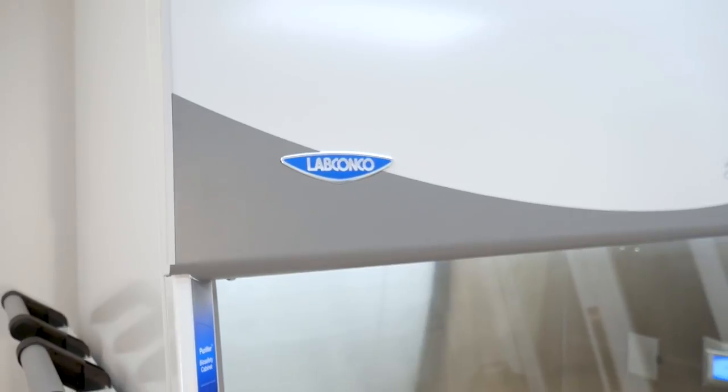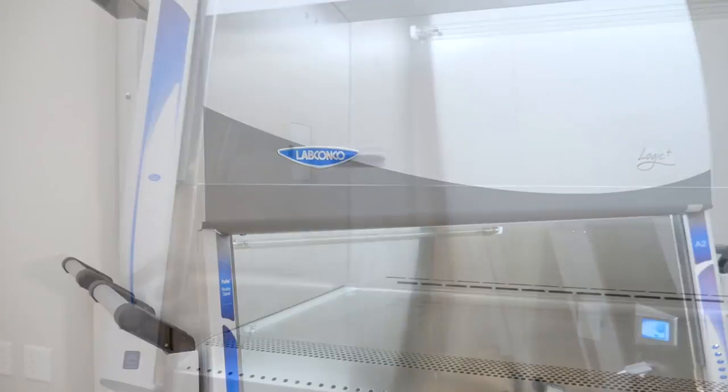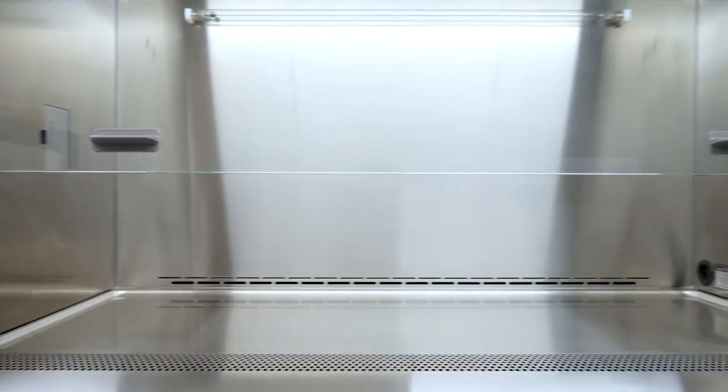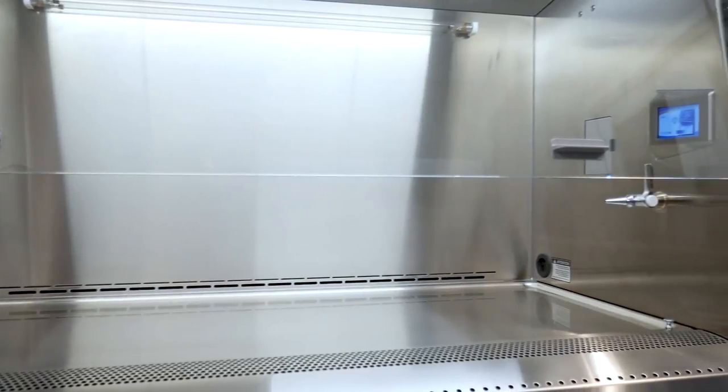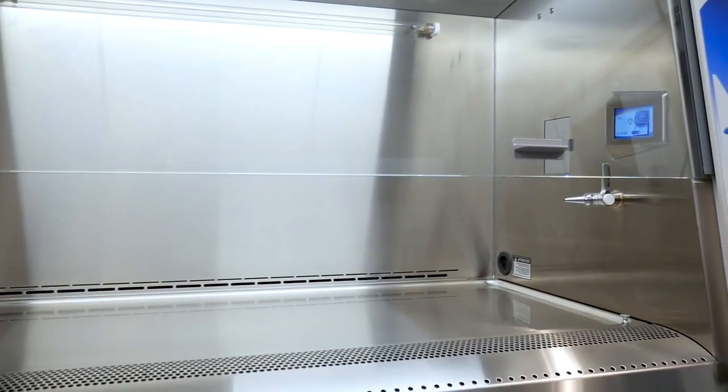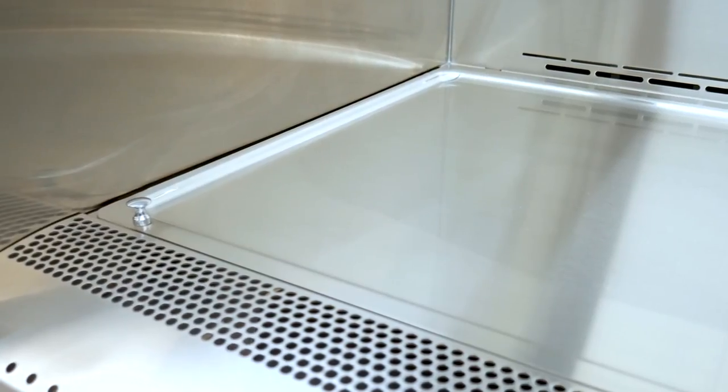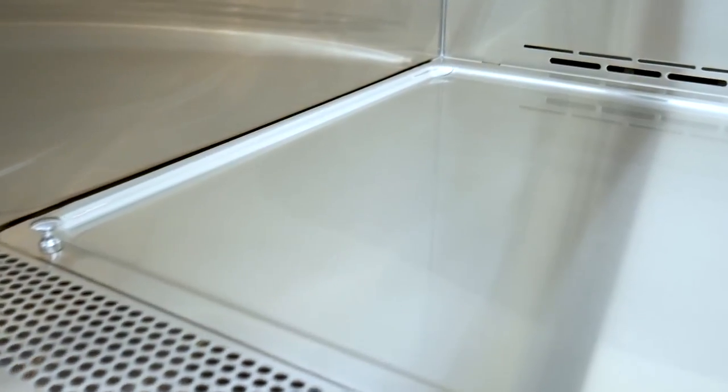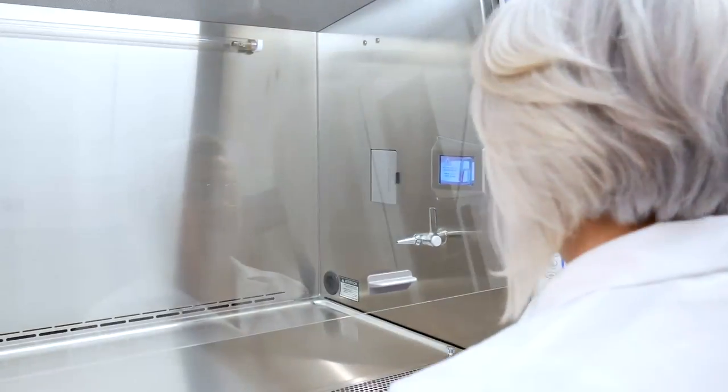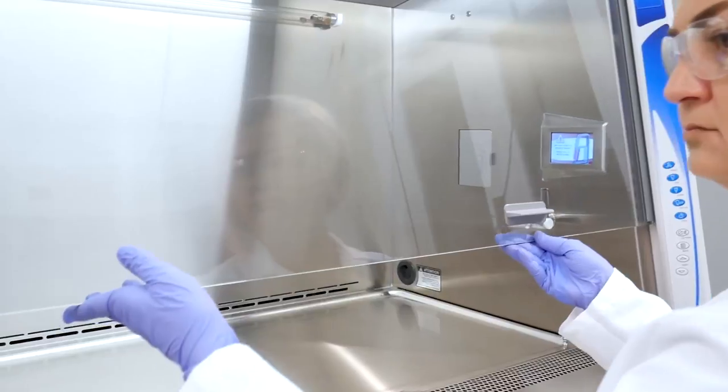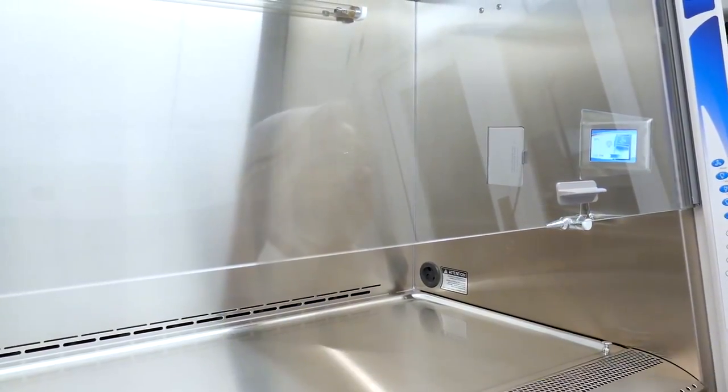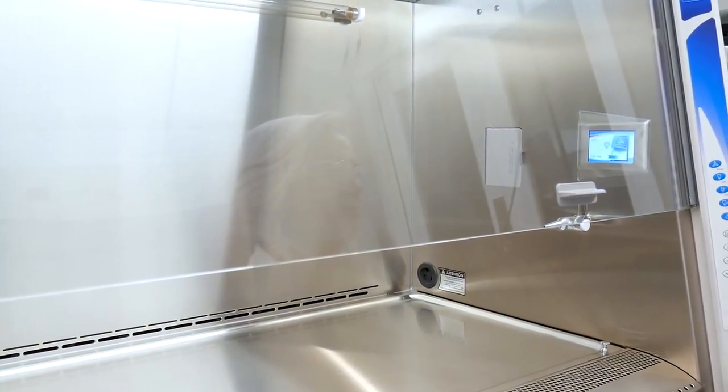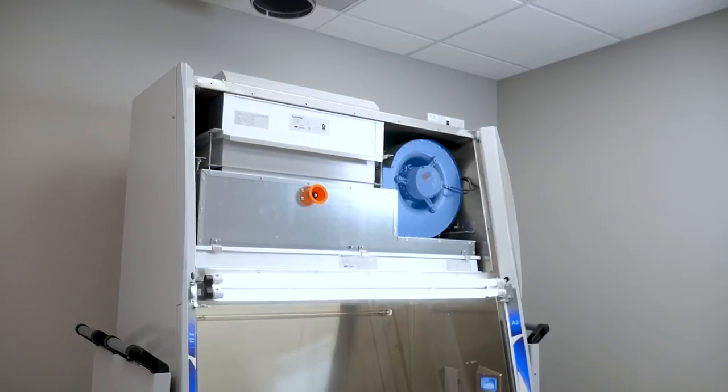Key parts of LabConco BSCs include a solid negative pressure hull constructed of stainless steel that contains biohazards, a seamless work surface with coved corners for easy cleaning, a glass sash that directs airflow through the cabinet and protects users from accidental splashes, and a powerful yet quiet internal blower which moves air through the BSC.